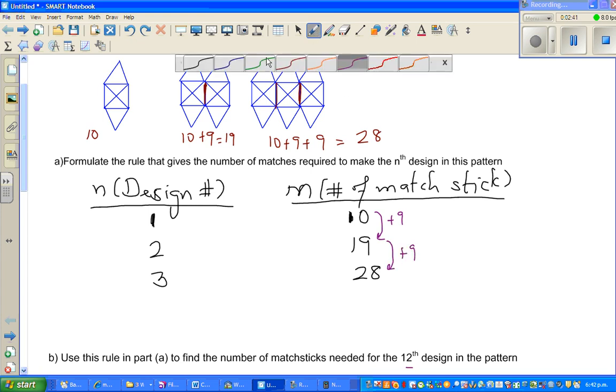So if you build up the pattern, the fourth would be what? The same, it will follow the same pattern, which is plus nine, which will give me 28 plus nine is 37.